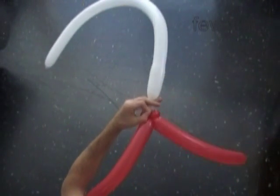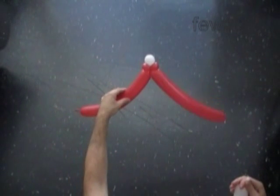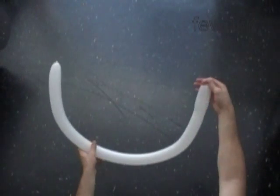Cut off the rest of the white balloon, keeping the air inside. Remember, we're going to use it to make the base of the hat. Tie off the end of the white balloon.